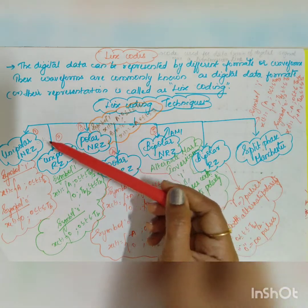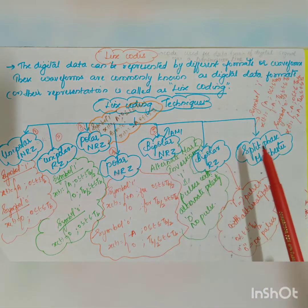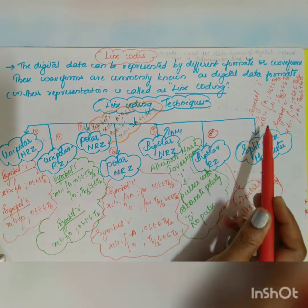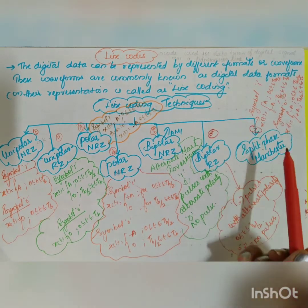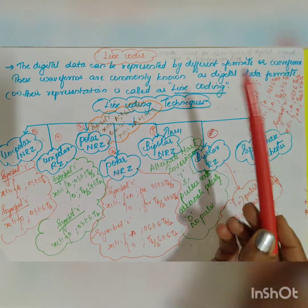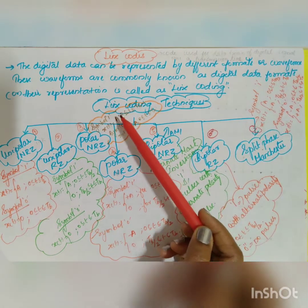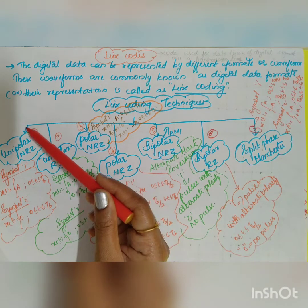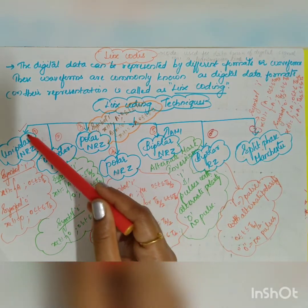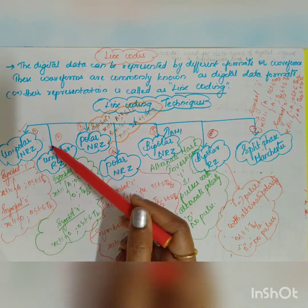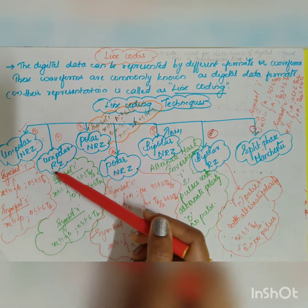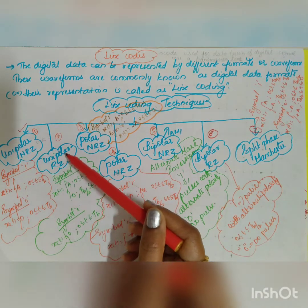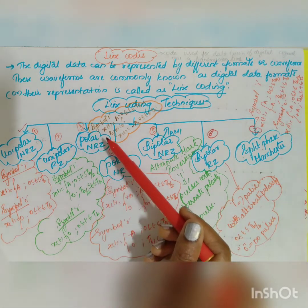There are mainly 7 types of line coding techniques. The first category is unipolar, which can again be divided into two types: unipolar non-return to zero and unipolar return to zero.